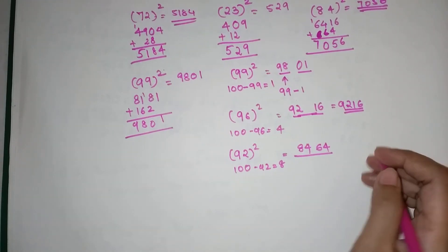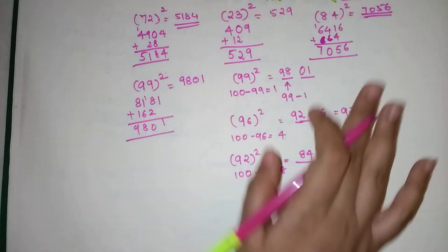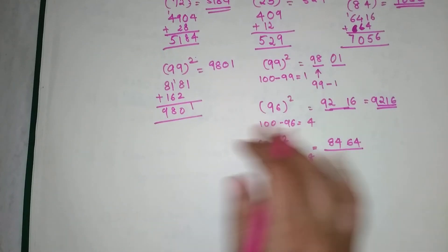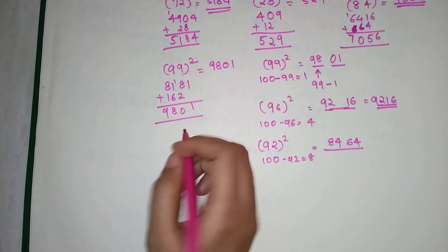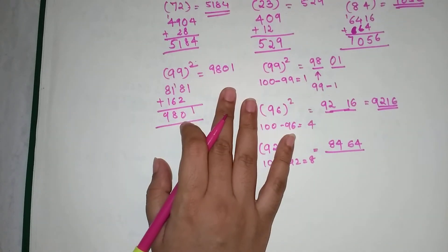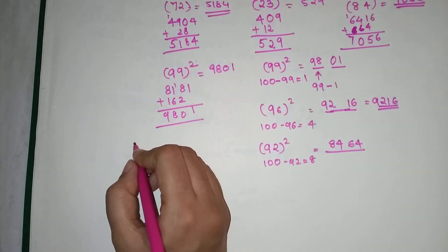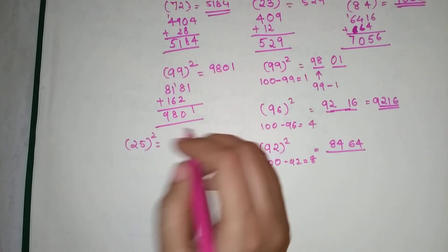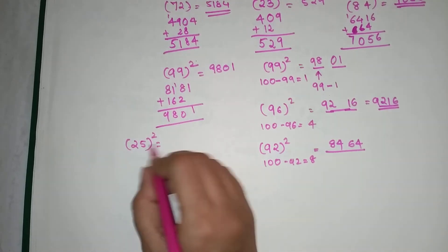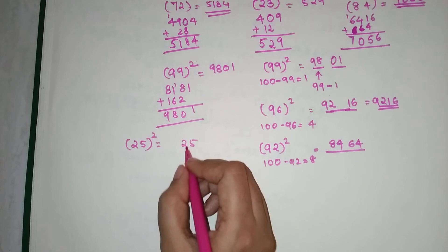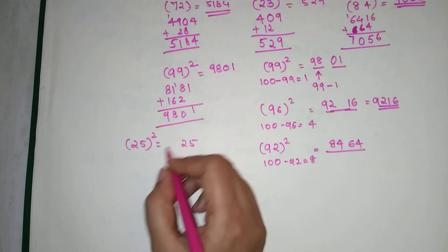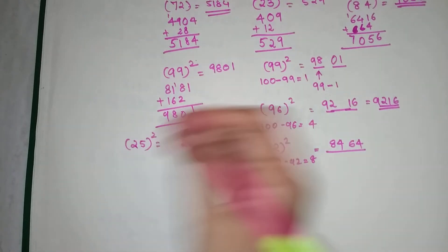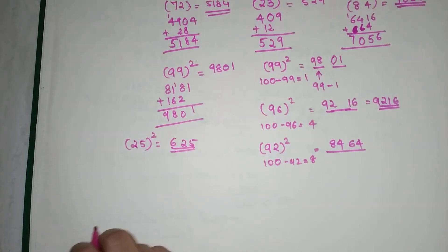Now I'm going to show you the last trick, with which you can find squares in two seconds. This trick is only applicable for numbers that have 5 in the units place. For example, 25²: write 25 as the last two digits. Then multiply the first digit 2 by the next number 3: 2 × 3 = 6. So the answer is 625.